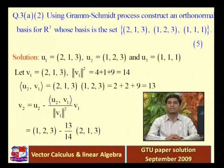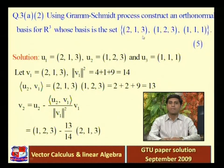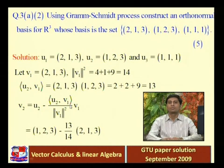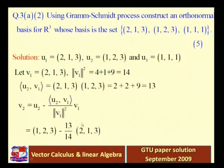The formulas to convert basis vectors into orthogonal basis vectors define the Gram-Schmidt process. Take the three basis vectors as u1, u2, u3. Set v1 = u1. Then v2 = u2 − [<u2,v1> / ‖v1‖²]·v1. And v3 = u3 − [<u3,v1> / ‖v1‖²]·v1 − [<u3,v2> / ‖v2‖²]·v2. Using these formulas we convert any basis into an orthogonal basis.